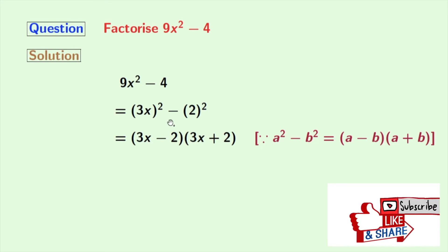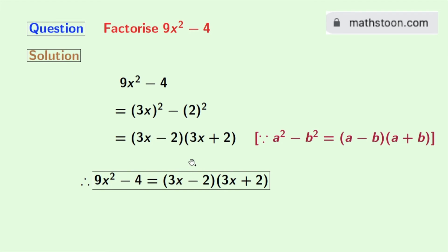We get (3x - 2) times (3x + 2). So finally we get 9x² - 4 = (3x - 2)(3x + 2). This is our desired factorization.